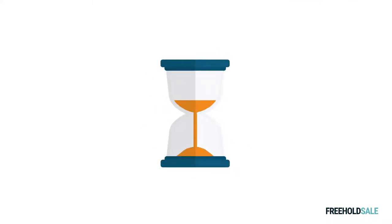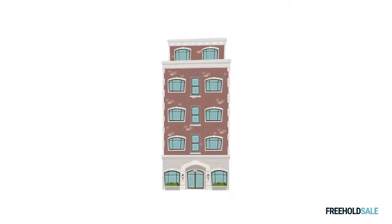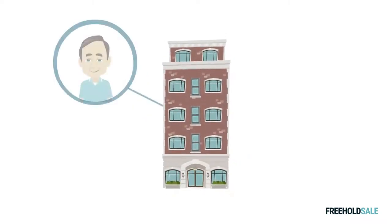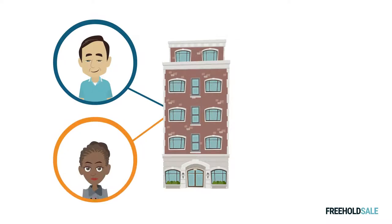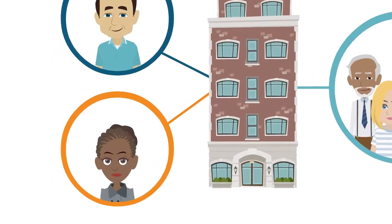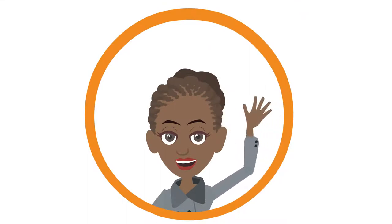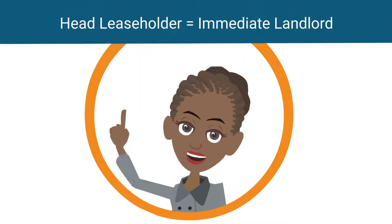Before we delve into the typical responsibilities, it's worth noting that in some less common cases the building may have been set up to have a freeholder, a head leaseholder, and leaseholders. In such circumstances, it is quite common for the head leaseholder to be responsible for complying with the freeholder's obligations, as they will be the immediate landlord for the under leases.